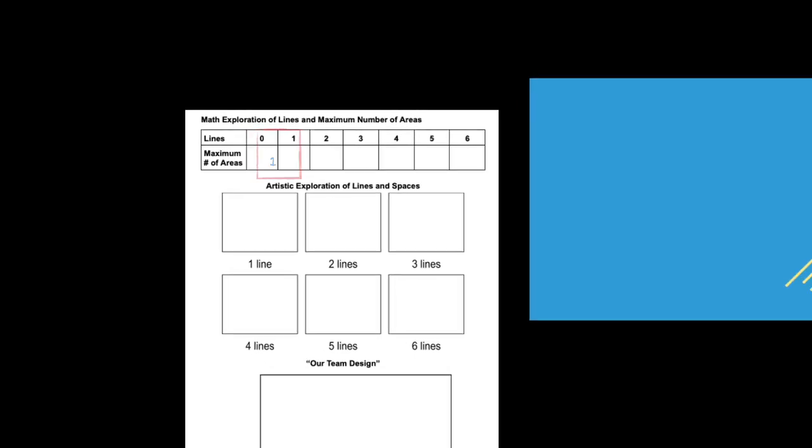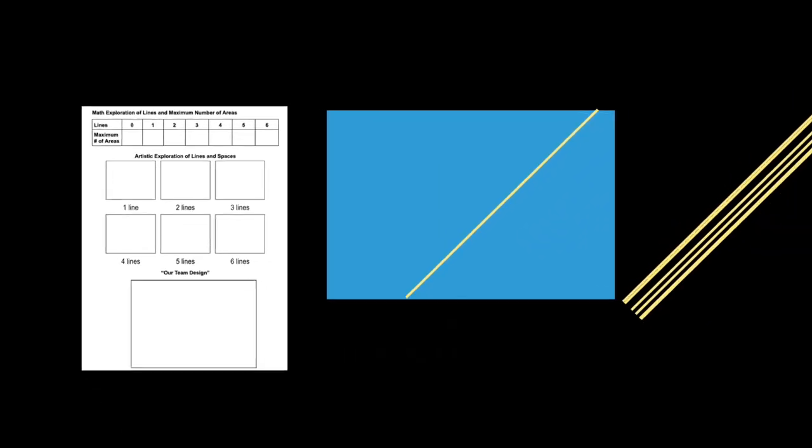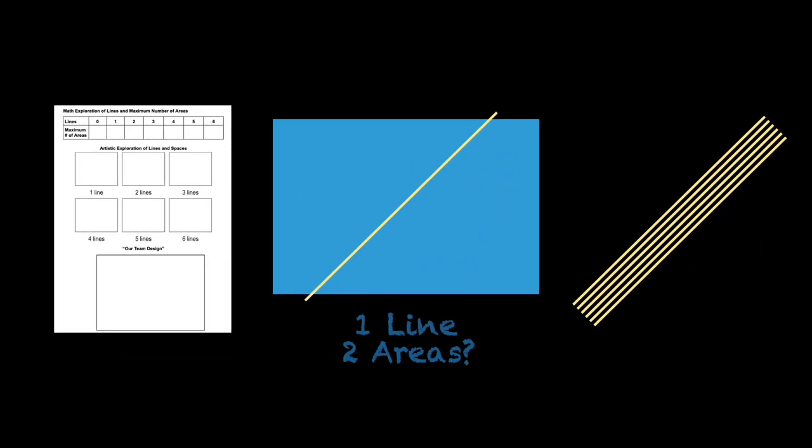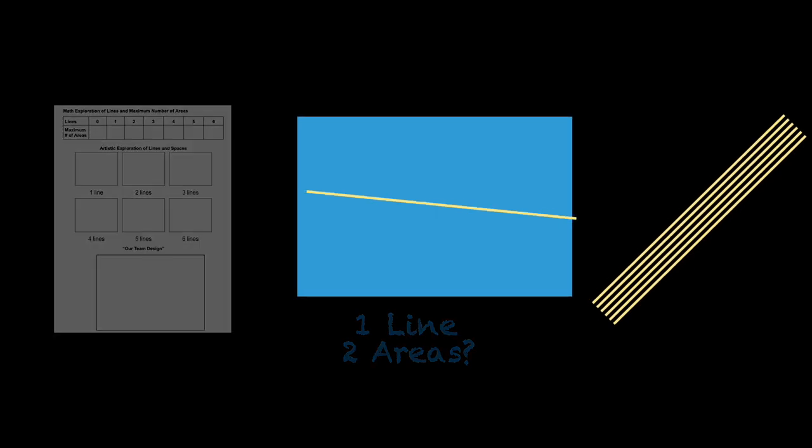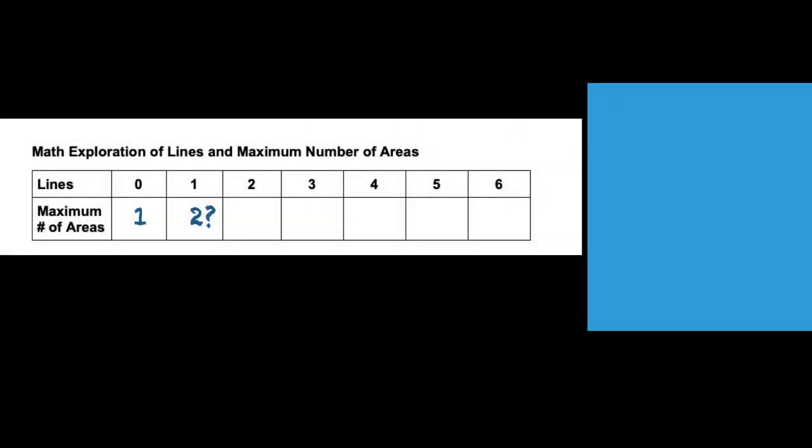If you place one pasta line on the colored paper, you see there are now two areas. Is there any way to make more than two areas with just one line? Turn the pasta in different ways to explore this idea. If you agree there's no way to make more than two areas dividing the space with one line, write a two in this box.